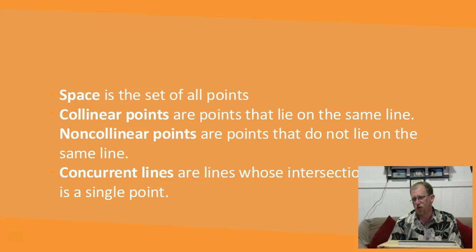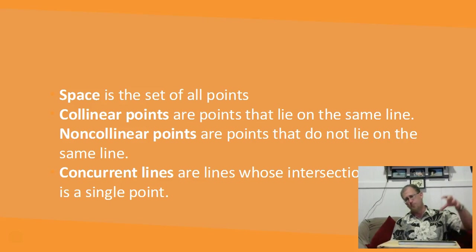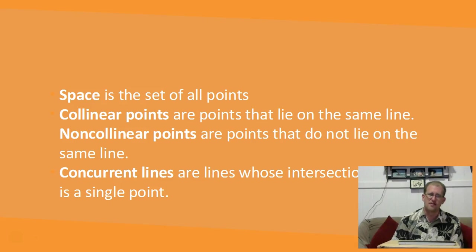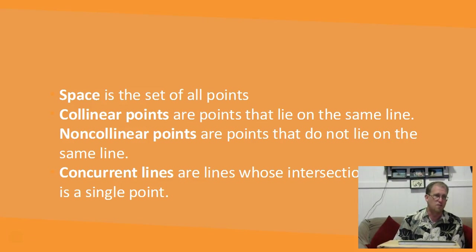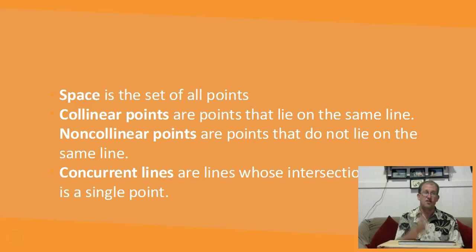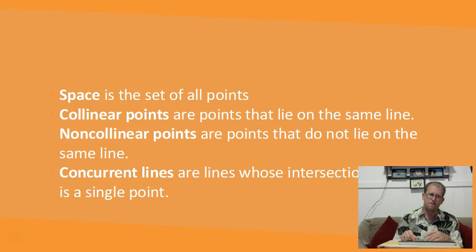There are also non-collinear points — for example, my car parked at work while your car is in traffic. I'm not in your line; I'm somewhere else. Concurrent lines are lines whose intersection is a single point. When lines intersect, they only ever intersect at one point because lines aren't curvy — they're straight. When two straight lines touch each other, they only touch in one place.